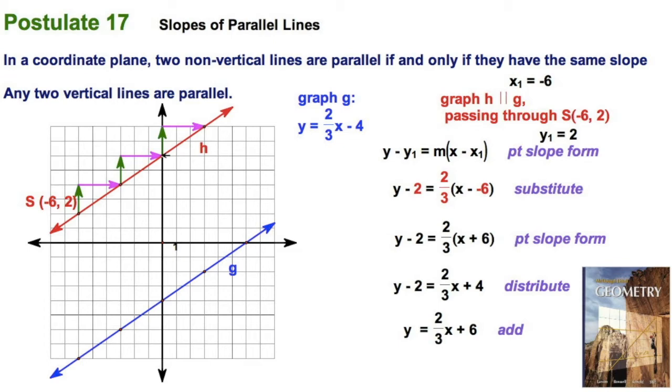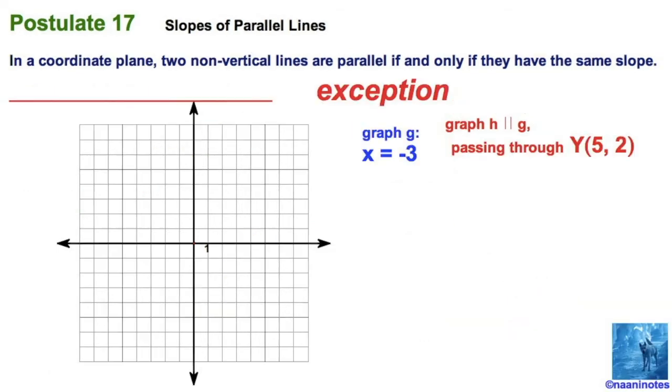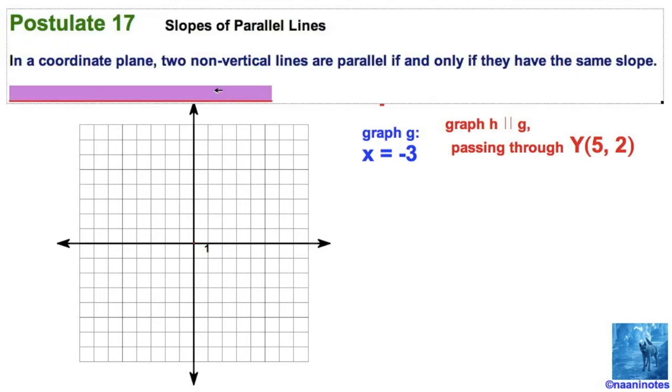That's an example. Don't worry, you'll get a whole sheet. You'll be doing a lot of practice on this. But this is just for your notes. Now, let's talk about this exception. We said any two non-vertical lines. What if they are vertical? Let's deal with it. I'm going to rewrite that exception, which says any two vertical lines are parallel.